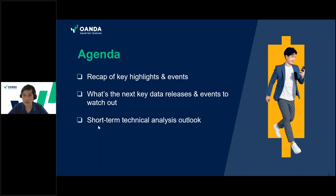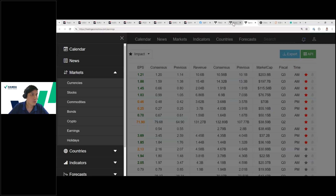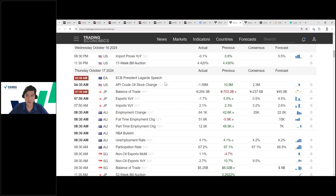Let us first start off with what has taken shape yesterday during the European session, the US session, and today's early Asia session in terms of news flow, economic data releases, and their respective impact on various cross asset classes. Starting with yesterday's European session — there was important data pertaining to the pound sterling, which is the UK inflation rate.